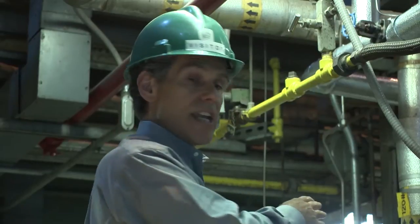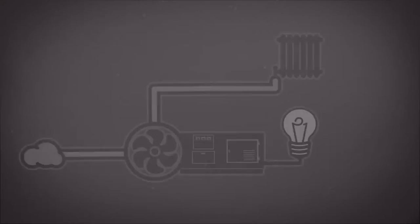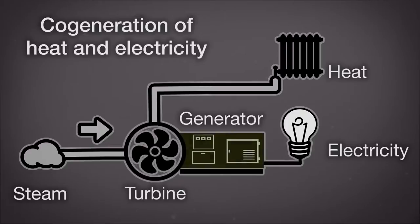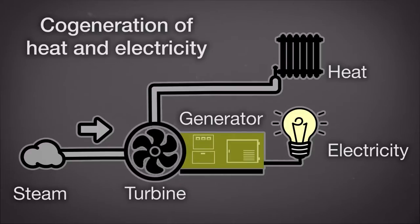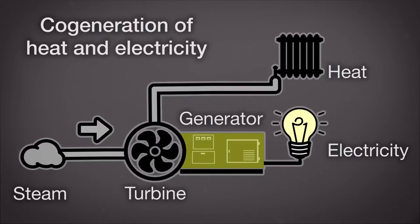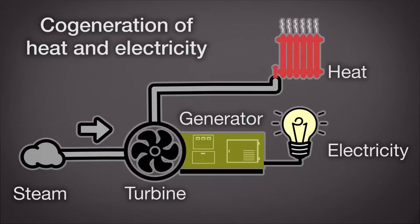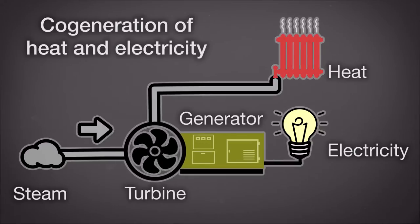The steam is then piped into the next room where it turns a turbine, which turns a generator, which generates electricity. In our case, that electricity is used to power about 40 percent of the Dartmouth campus electrical needs. After passing through the turbine, the steam goes out to campus where it heats buildings and heats water.